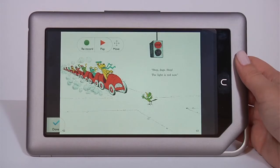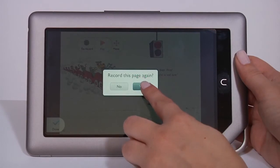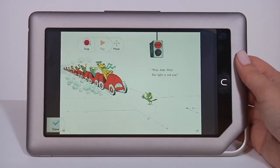If you want to make a change, just tap Rerecord. Stop dogs, stop! The light is red now!